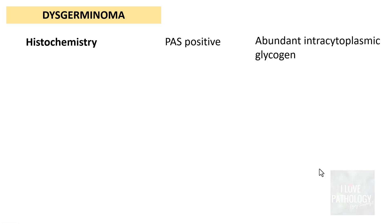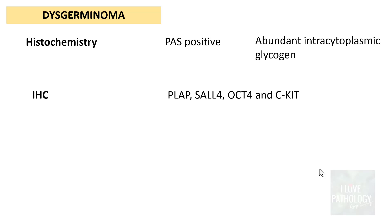On histochemistry, the cells of dysgerminoma are PAS (Periodic Acid-Schiff) positive because they contain abundant intracytoplasmic glycogen. On immunohistochemistry, they are positive for PLAP, SALL4, OCT4, and CD117 (c-KIT). As I mentioned, KIT mutations are common in dysgerminomas, so you find these features on immunohistochemistry.